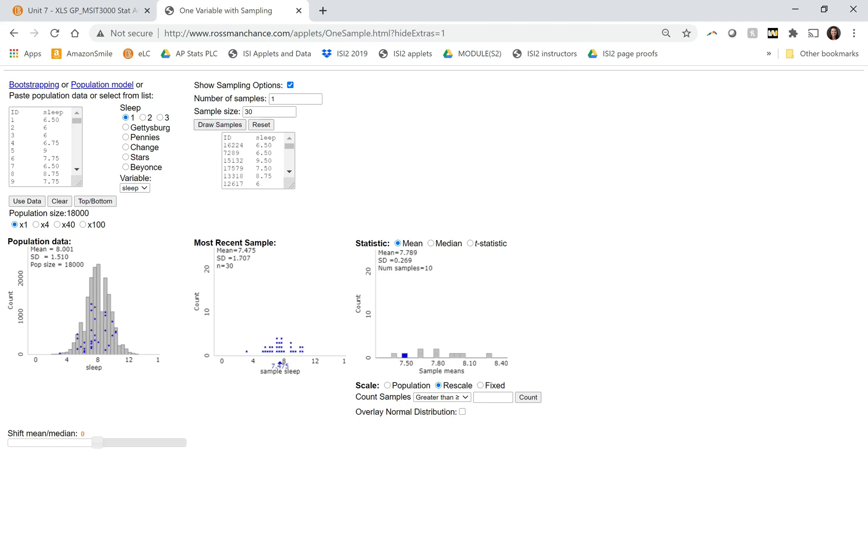So right now, I've done 10 samples from this population. All of them had slightly different sample means, and we're plotting those there. If we want to see all the different sample means that we can get or estimate that distribution, I'm going to do a much bigger number of samples. So let's get up to 1,000.